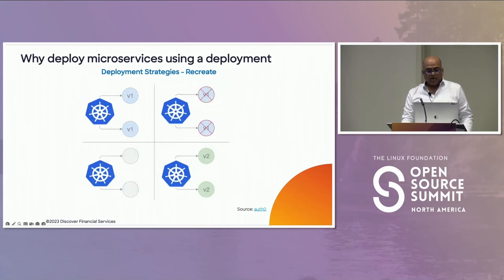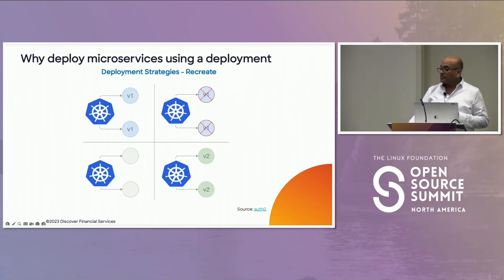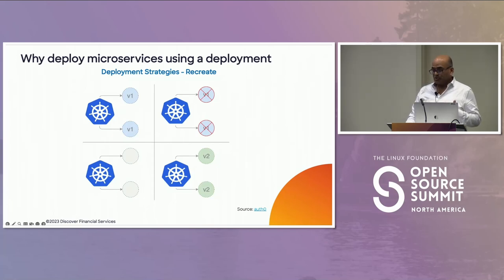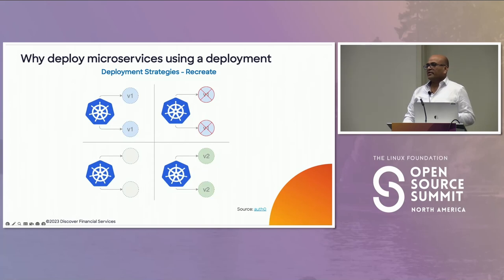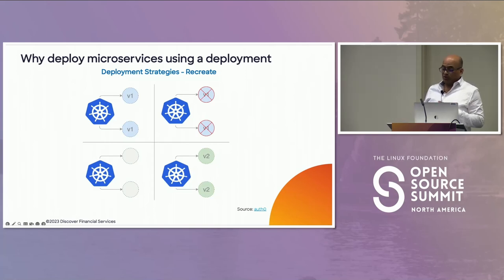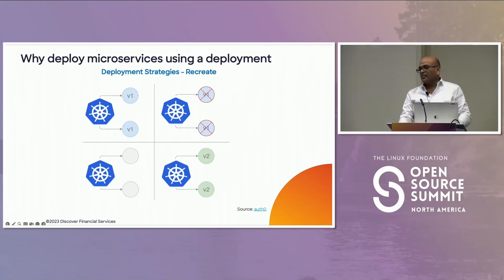With recreate, if somebody is on your app and the connection is gone — imagine the kind of reputation you're building. This strategy is for experimentation, staging, and development — not production. Blue-green allows you to have parallel services running at the same time. Blue is the existing running service; green is the new one. The disadvantage is you have double the number of pods. The advantage is you get to test in production — and a production-like environment is never truly the same as production.